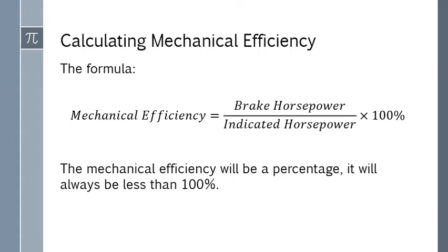Like volumetric efficiency, mechanical efficiency will be given as a percent. We're going to take a fraction and multiply it by 100 percent to create that. Our indicated horsepower, the ideal, goes on the bottom. The brake horsepower, what actually happens, goes on the top. If you do that, the brake horsepower will always be a smaller number, so your mechanical efficiency will always be less than 100 percent.